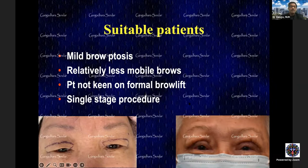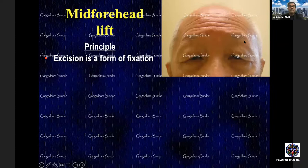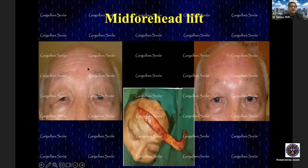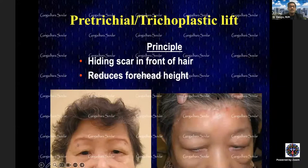A mid-forehead lift is used in patients with deep forehead furrows where scars can be hidden within existing creases. The disadvantage is that a poor scar in this location is visible to everyone, so careful wound closure is essential. An example shows a patient who had a mid-forehead lift with no eyelid surgery, achieving a clear visual axis while avoiding blepharoplasty and ptosis repair.